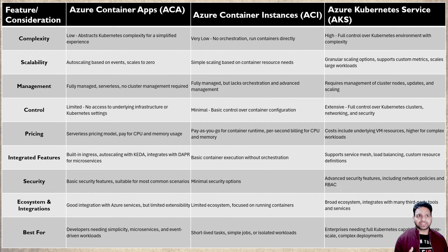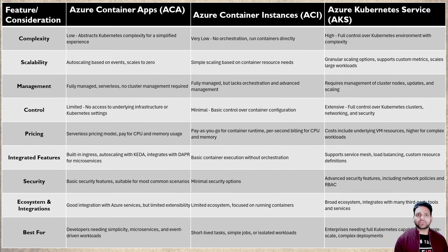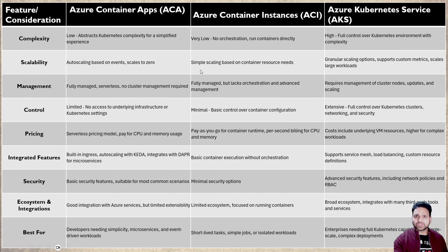Considering the different features and comparisons between these three services: the complexity of Azure Container Instances is very low, Azure Container Apps is medium, and AKS is high because you have full control of your worker nodes and must manage the underlying infrastructure. For scalability, auto-scaling works on Azure Container Apps; ACI has only simple scaling; and AKS supports custom metrics with multiple scaling options. For management, only AKS requires you to manage your cluster.